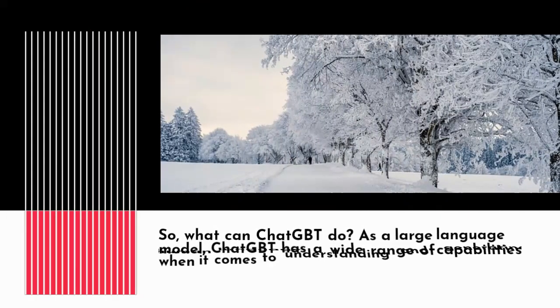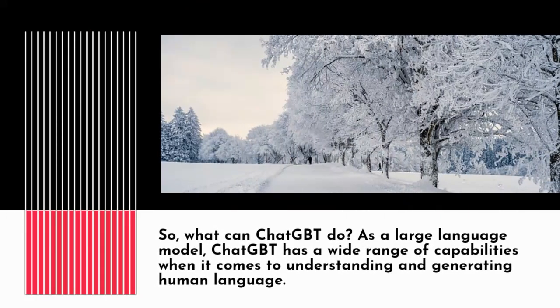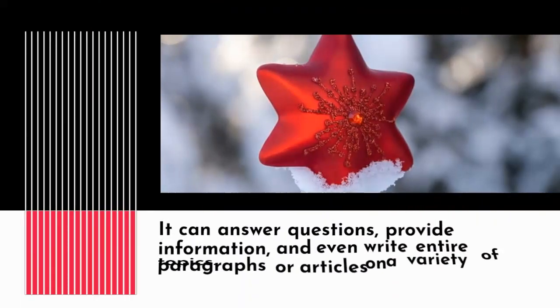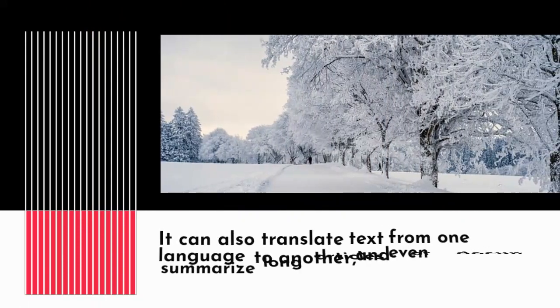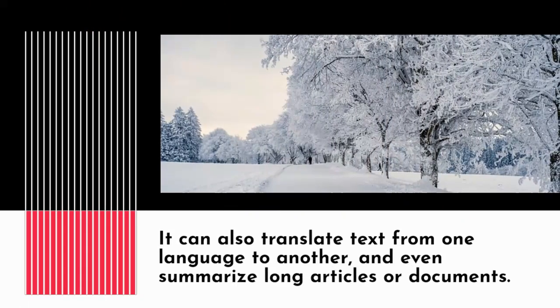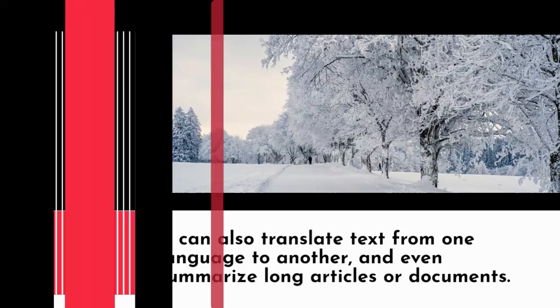What can ChatGPT do? As a large language model, ChatGPT has a wide range of capabilities when it comes to understanding and generating human language. It can answer questions, provide information, and even write entire paragraphs or articles on a variety of topics. It can also translate text from one language to another, and even summarize long articles or documents.